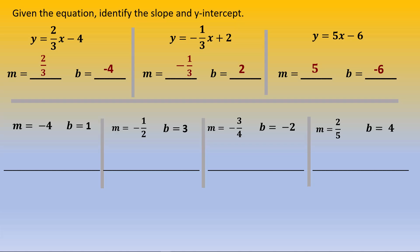Given these m and b combinations, we write the equation simply by replacing m with the number given. If m is negative 4 and b is 1, the equation is y equals negative 4x plus 1. You can see the graph in Desmos: the line crosses through 1 on the y-axis and has a slope of negative 4 over 1.